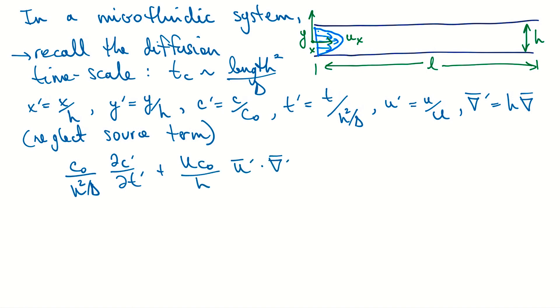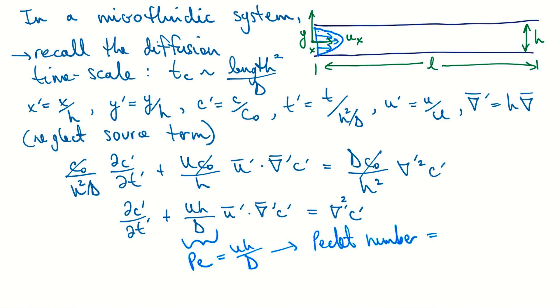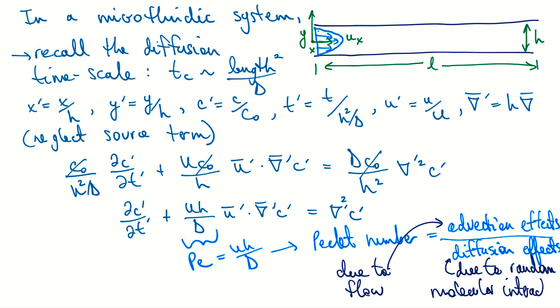Substituting in and simplifying as we've done many times, we can take care of several terms and rewrite a simplified form. What emerges from non-dimensionalizing is the Péclet number: the ratio of advection effects over diffusion effects. Advection is due to flow; diffusion is due to random molecular interactions. Knowing the Péclet number for a given situation tells us a great deal about the relationship between advection and diffusion effects.